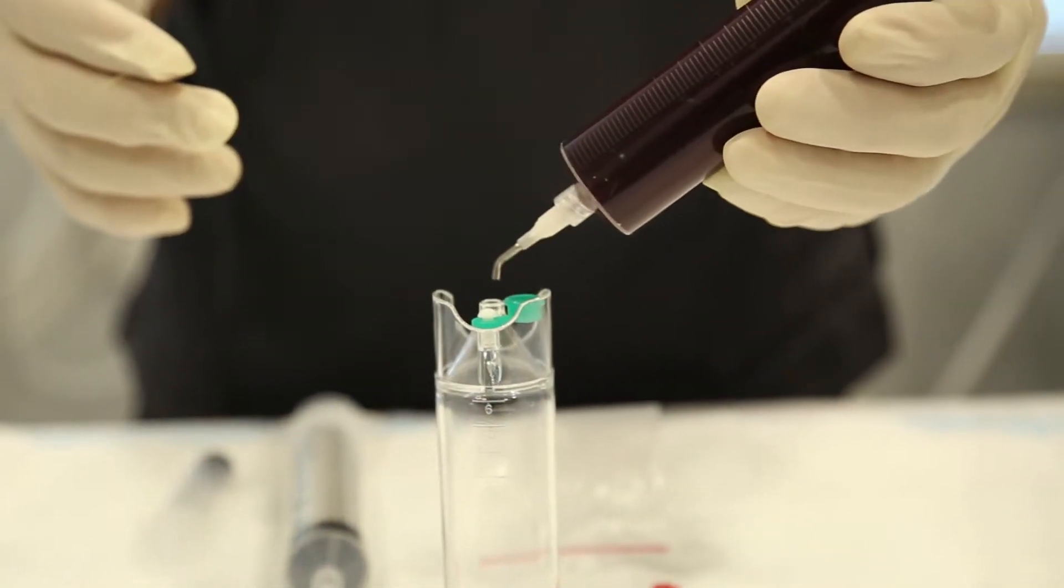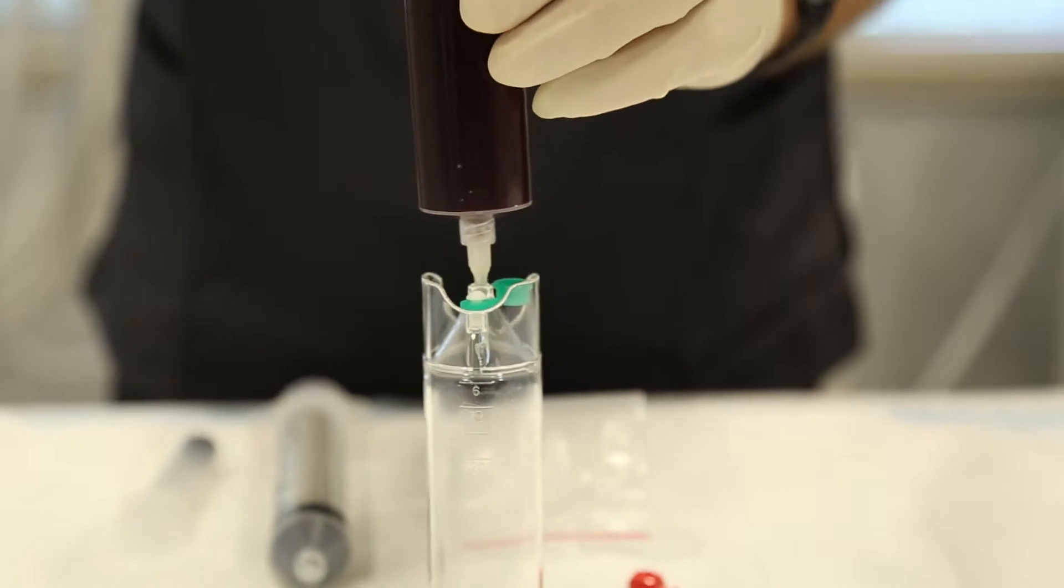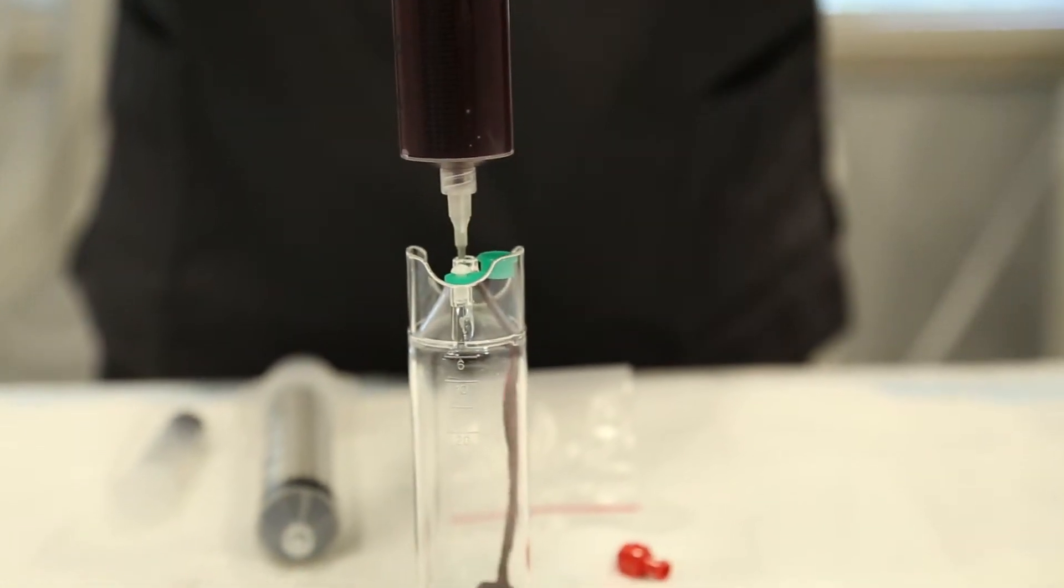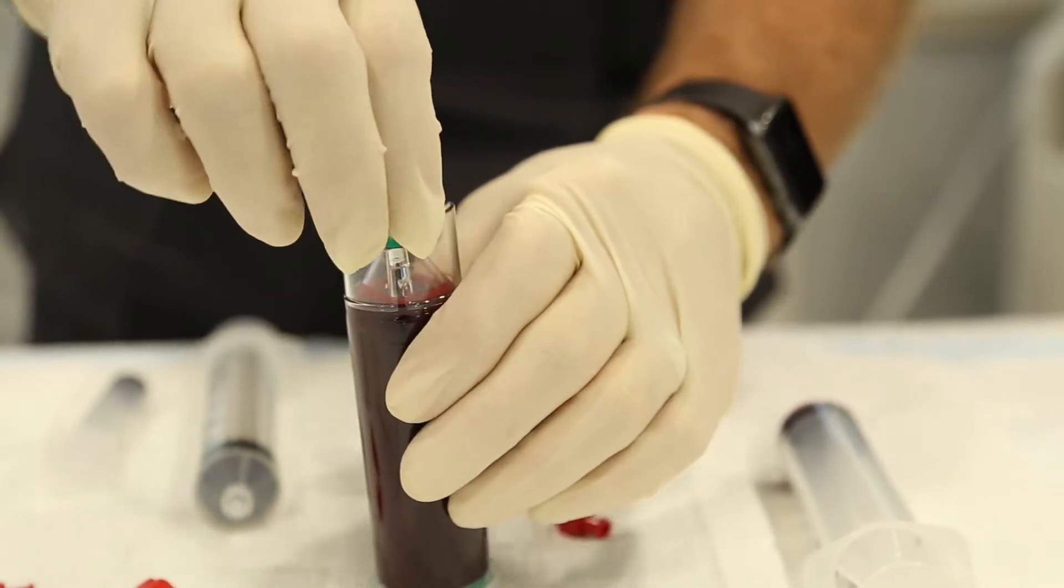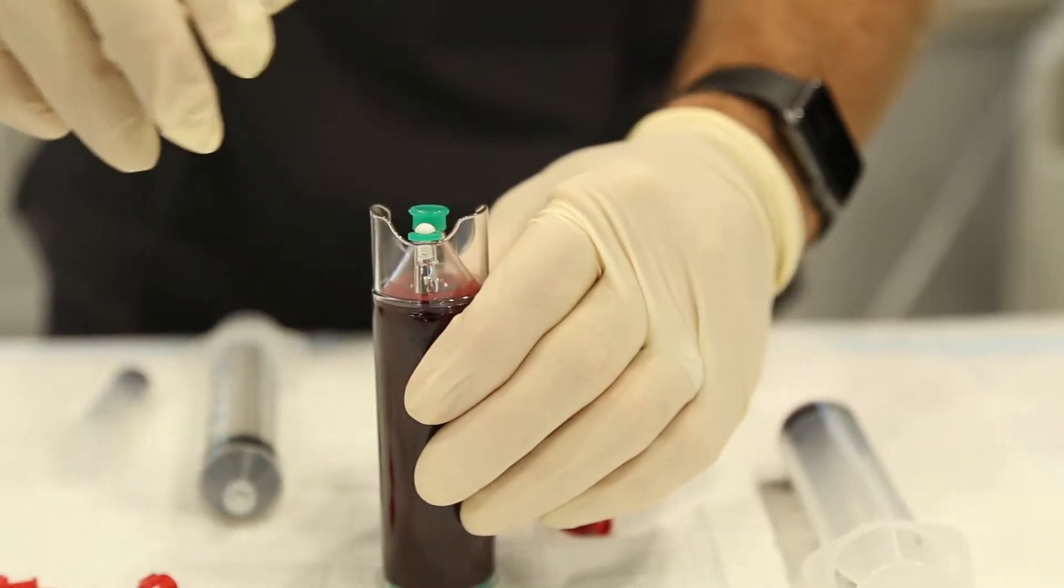Using the 45 degree dispensing tip, slowly transfer the anticoagulated whole blood into the XL concentrating device. Secure the green silicone cap and the clear safety cap to the concentrating device.